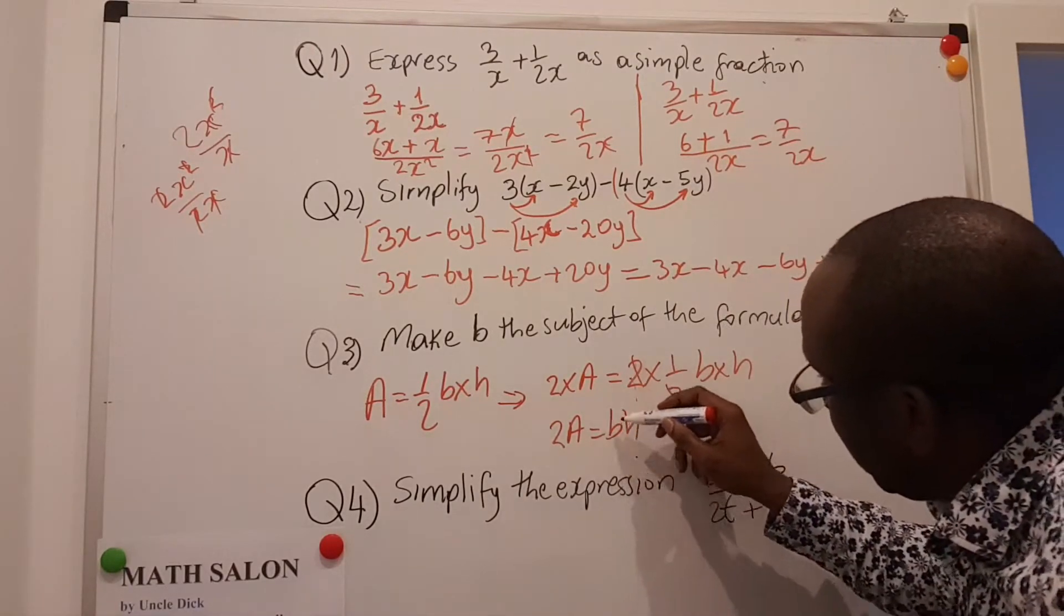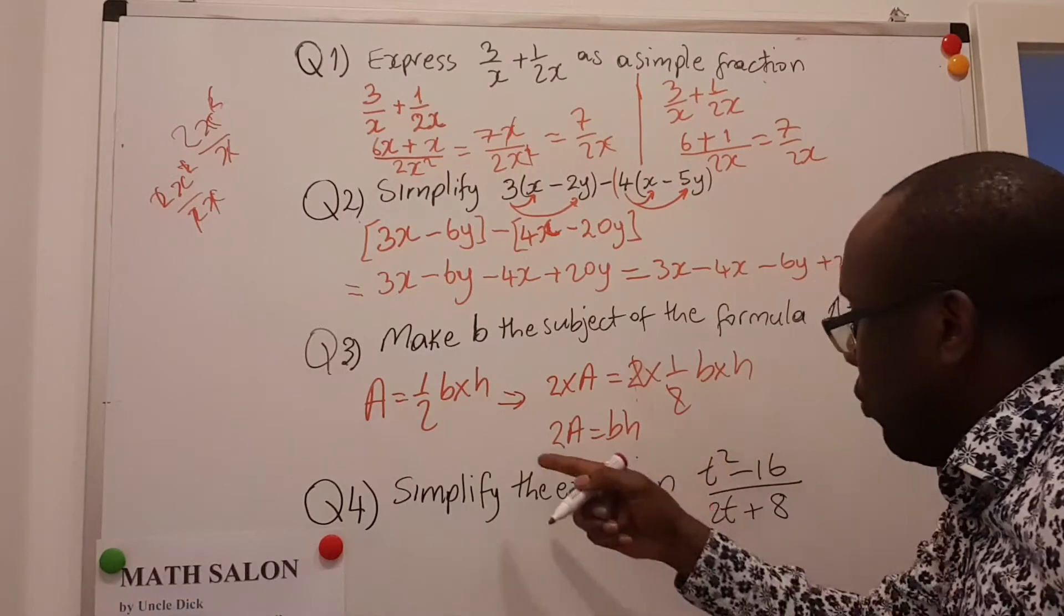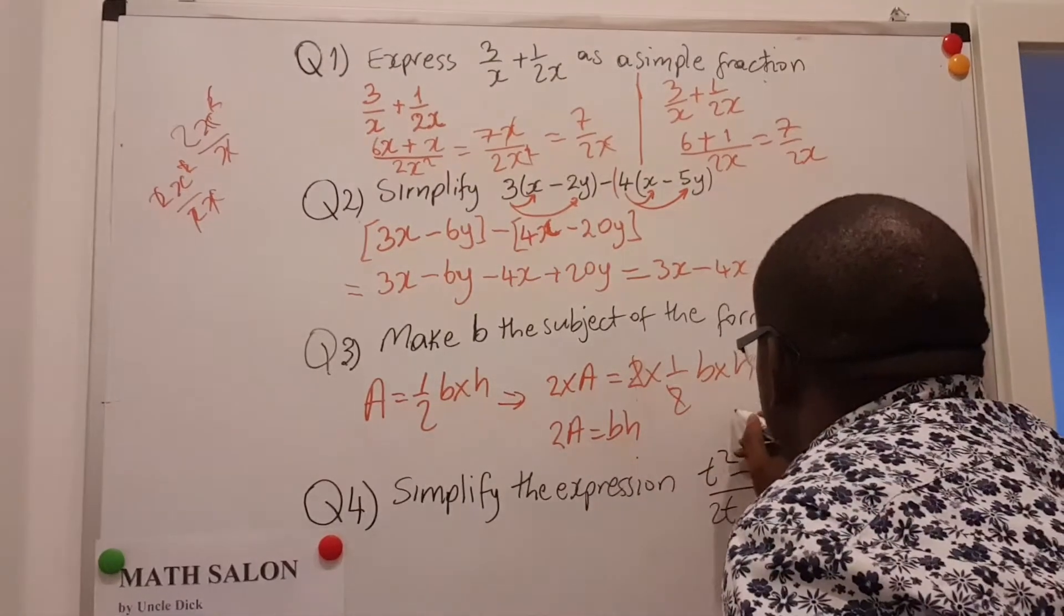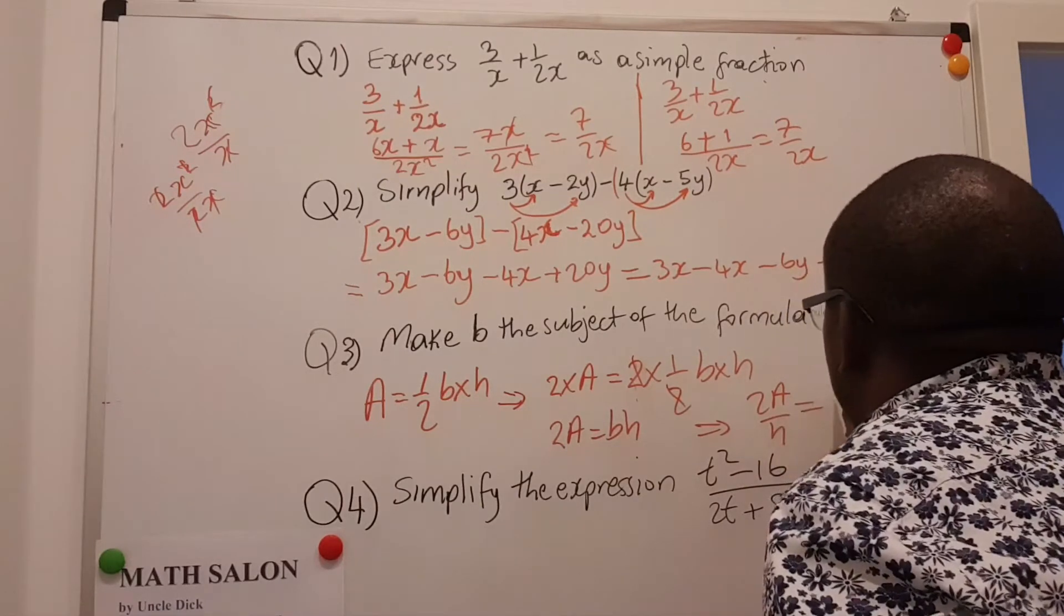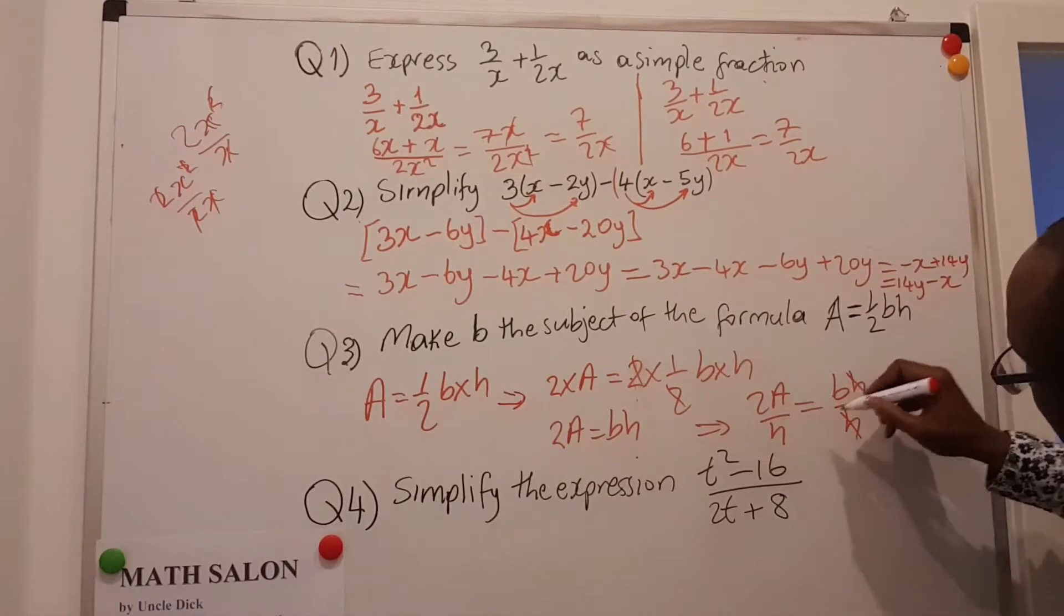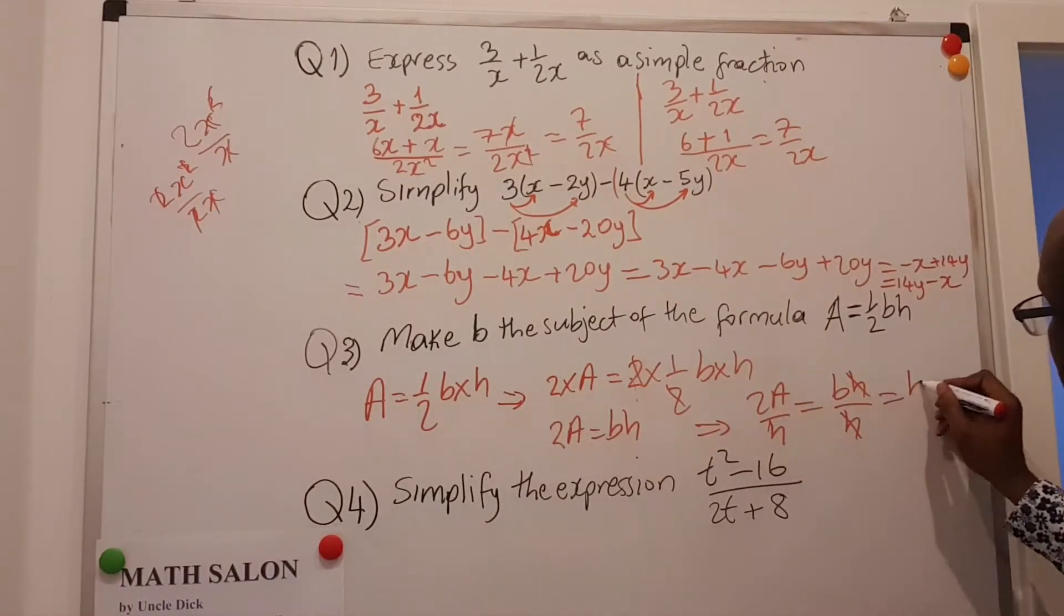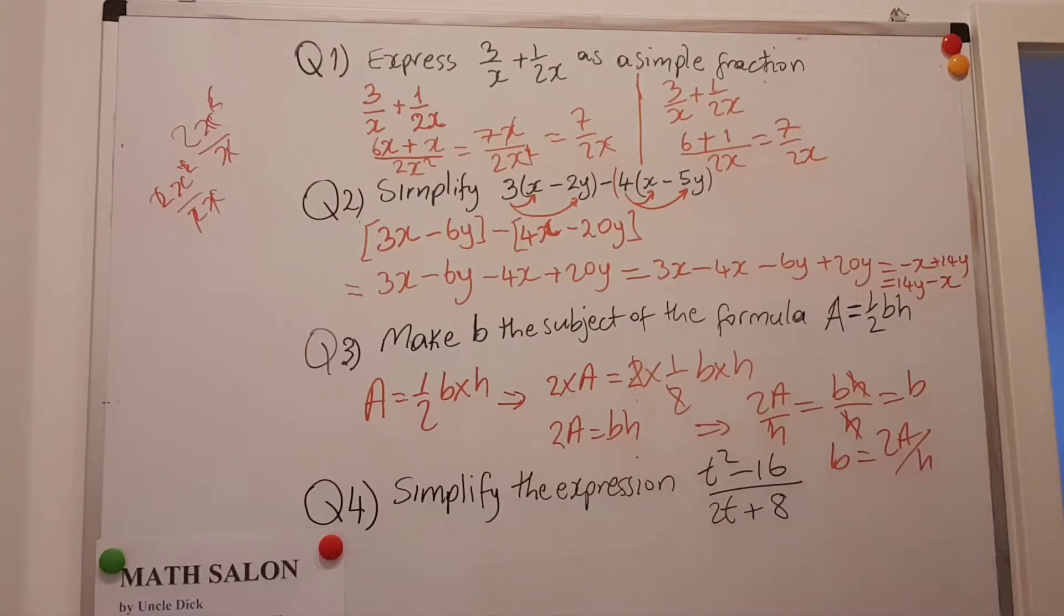I'm expected to keep only B, so H has to go. H was multiplied here, so I will try to divide both sides. That means 2A divided by H is equal to BH divided by H. This H goes off with that, and this is B. So B is equal to 2A divided by H. So B is now the subject of that formula.